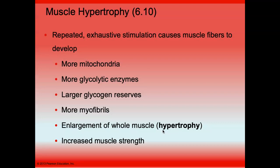Hypertrophy is when we overwork our muscles through repeated exhaustive stimulation. People using machines at the gym are doing exactly that to their muscle fibers. This causes the muscle fibers to develop more mitochondria, more enzymes, more reserves, and more myofibrils. It enlarges the whole muscle, which is called hypertrophy, and you get stronger.